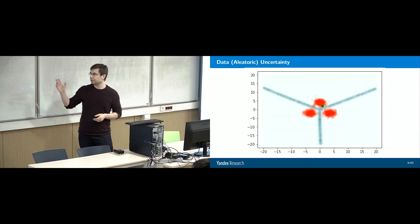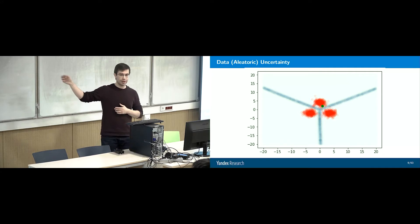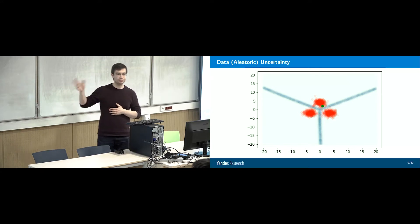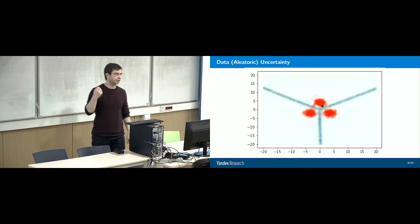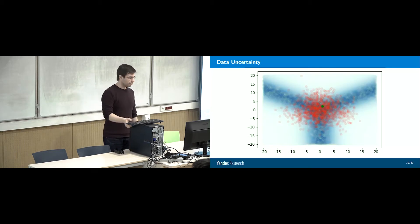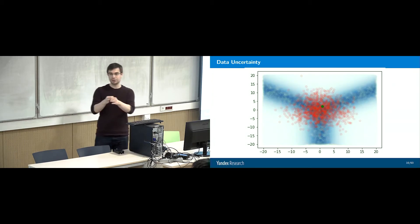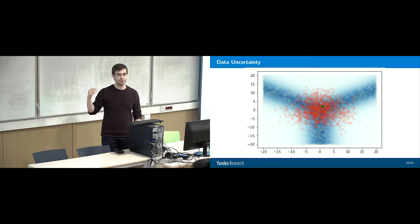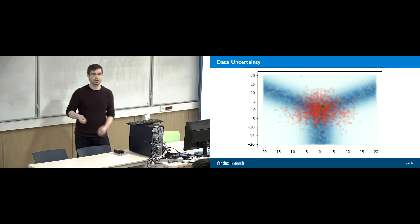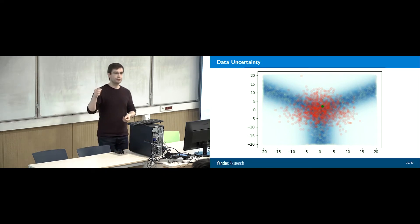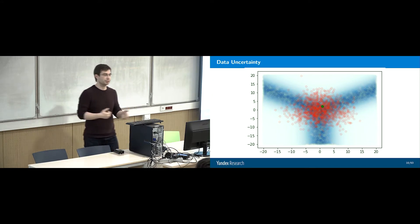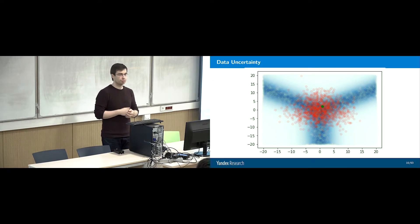Data uncertainty is due to class overlap. Here we have three Gaussian blobs. With a green dot where classes are non-overlapping, we can easily classify it as class two. But if the classes start to overlap, it's hard to say which class this input belongs to — it could be class two, three, or four. The features correspond to many classes at the same time, so we can't resolve this uncertainty. It's unresolvable.